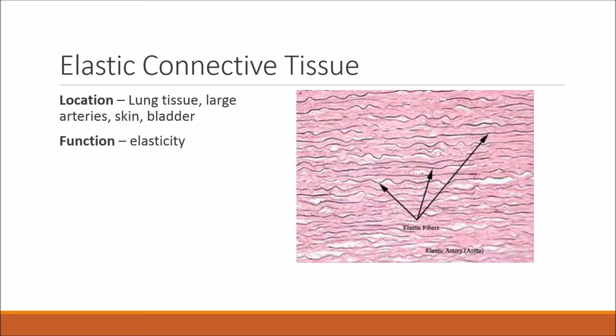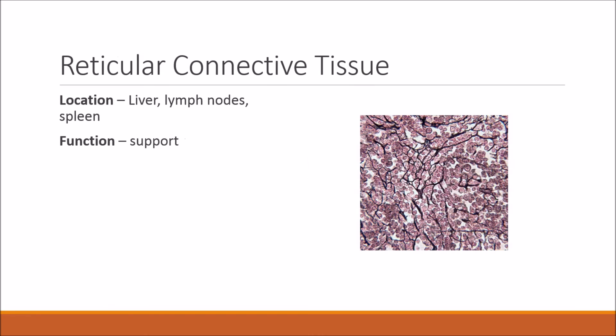Elastic connective tissue is found in lung tissue, large arteries, skin, and bladder — anything that requires stretching — and its function is elasticity. Reticular connective tissue is found in the lymph nodes, liver, and spleen, and is used for support.